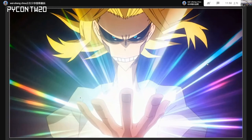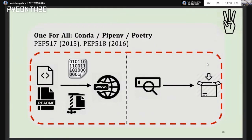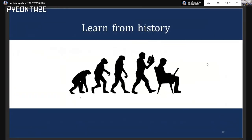You might think Python packaging history is comprehensive and we have almost everything — but one thing still missing is a 'one for all' solution. That's exactly one of the topics today's keynote talks about. Conda, pipenv, and Poetry are those newer all-in-one solutions trying to solve build, publish, install, and deploy problems all together through an isolated virtual environment.